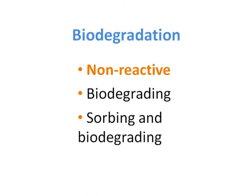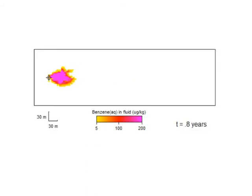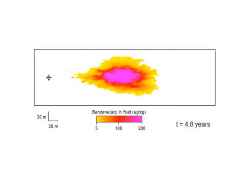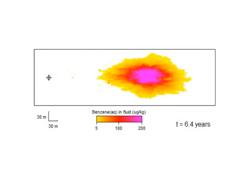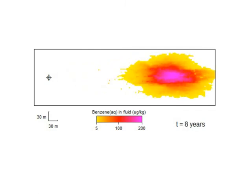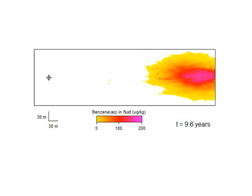The first example describes the non-reacting case, for reference. The benzene plume enters the domain, travels laterally due to advection, and spreads due to hydrodynamic dispersion arising from the heterogeneous nature of the domain.